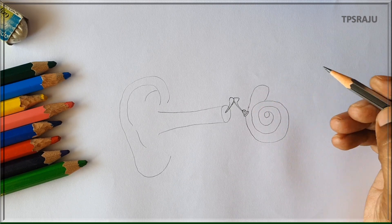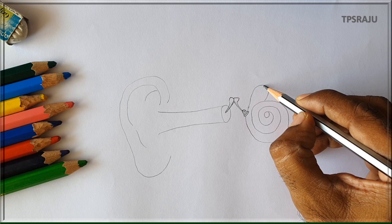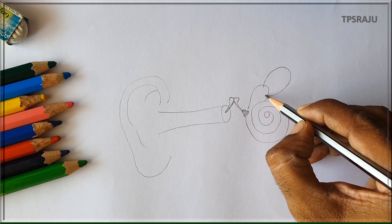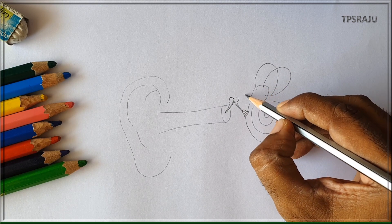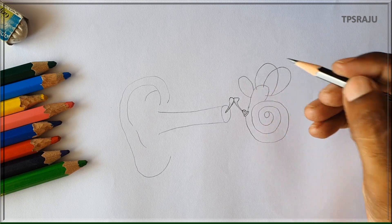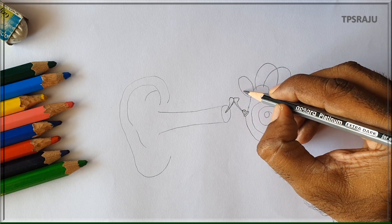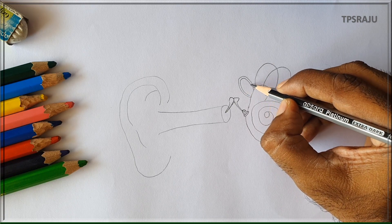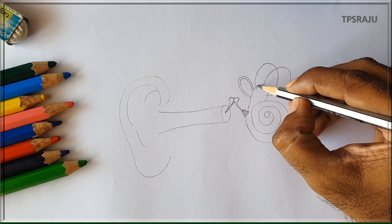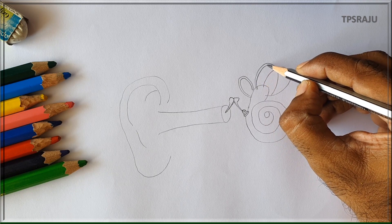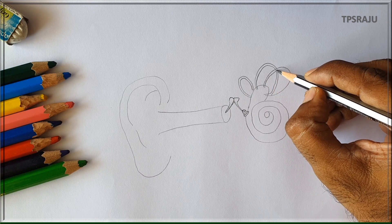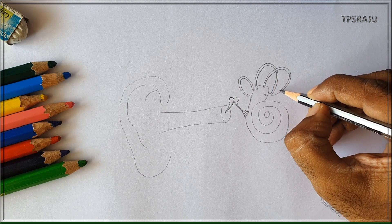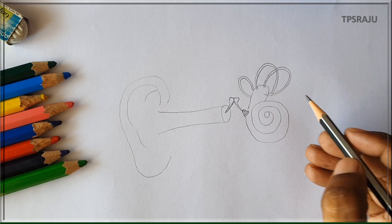On the top of cochlea, there is a box-like structure called vestibule. On the vestibule, three semicircular canals are attached. These help in maintaining equilibrium of the body. These are the semicircular canals.